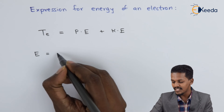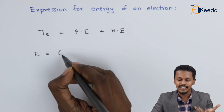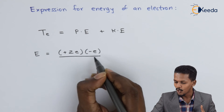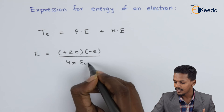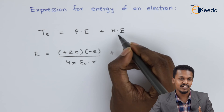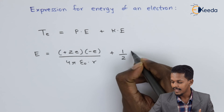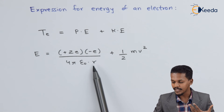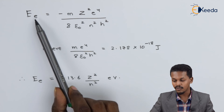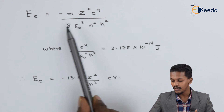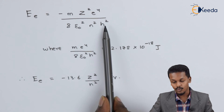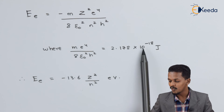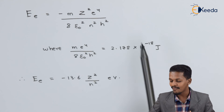The potential energy: the positive particle (proton) is present in the nucleus, giving a term ZE, and the electron contributes −E, so the potential energy is −ZE² / (4πε₀R). Plus the kinetic energy of the revolving electron, which is ½MV². Substituting the expressions for V and R that we already derived, the energy of the electron becomes: E = −MZ²E⁴ / (8ε₀²N²H²). The constant ME⁴ / (8ε₀²H²) has a value of 2.178 × 10⁻¹⁸ joules.